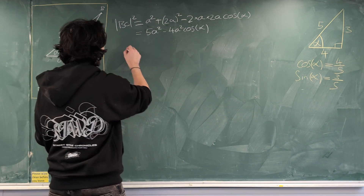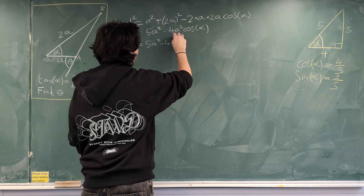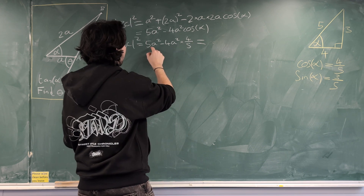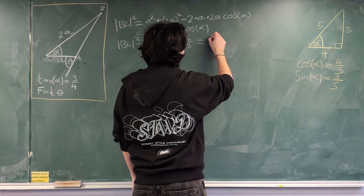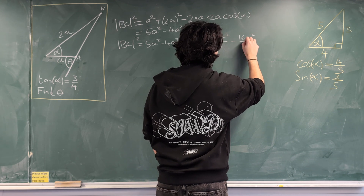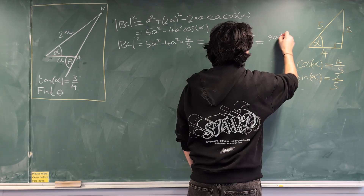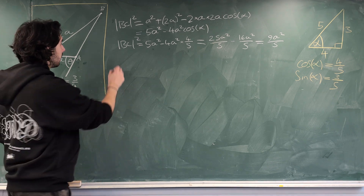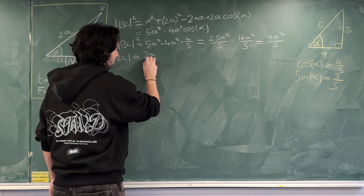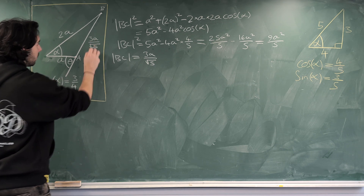So BC² = 5a² − 4a² × cos alpha, which is 4/5. That gives 5a² − 16a²/5. Writing with a common denominator: 25a²/5 − 16a²/5 = 9a²/5. So the length BC = 3a / √5.